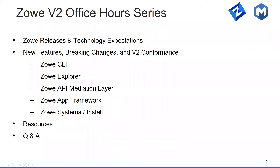For today, what we wanted to do was just do a recap on all of the V2 Office Hours that we presented to date. If you've joined any of them, you know that they follow this general pattern of agenda. We talk about the Zoe releases and technology expectations first, then we go into the new features, breaking changes, and V2 conformance criteria associated with each of the Zoe components that are extensible to date. We also added one more item to that list, labeled Zoe Systems Install, as there are a number of changes that were made to the installation process for Zoe ZOS components.